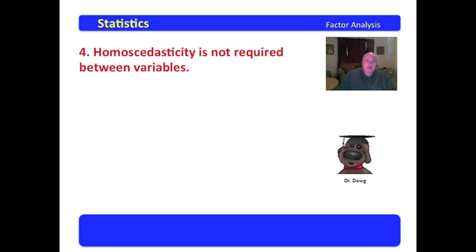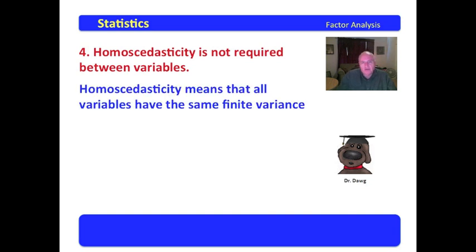Oh, here's a big word. Homoscedasticity is not required between variables. This term means that all variables have the same finite variance. In other words, another way of saying this is that you have homogeneity of variance.